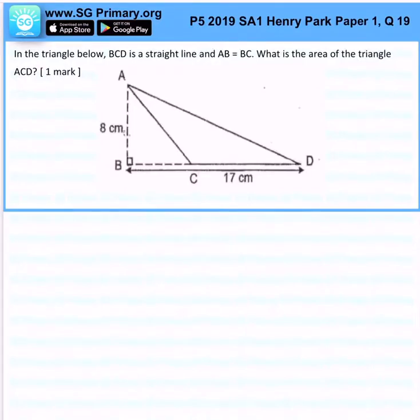In the triangle below, BCD is a straight line and AB is equal to BC, so this will be 8 as well. What is the area of the triangle?